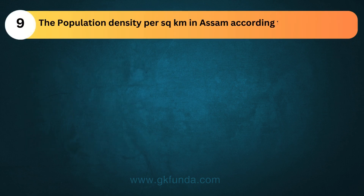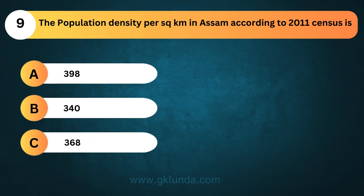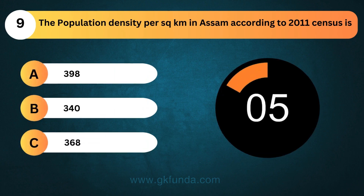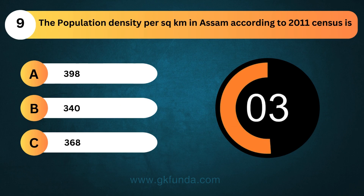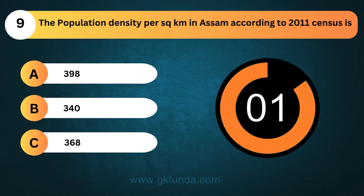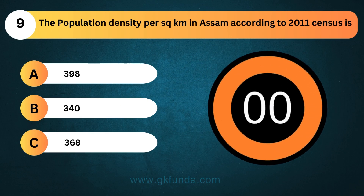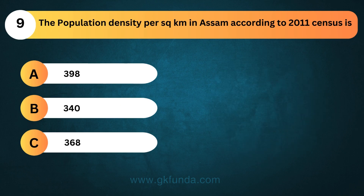The population density per square kilometer in Assam, according to the 2011 census, is? The answer is option A, 398.